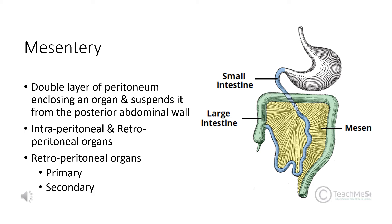There are two types of retroperitoneal organs: primarily retroperitoneal and secondarily retroperitoneal. Primarily retroperitoneal organs — such as the kidneys, suprarenal glands, and ureters — are originally situated outside the peritoneal cavity. Secondarily retroperitoneal organs are initially suspended by peritoneal folds but later lose their mesenteries and become retroperitoneal. Examples of secondarily retroperitoneal organs are the pancreas, duodenum, and parts of the large intestine such as the ascending colon, descending colon, and cecum.